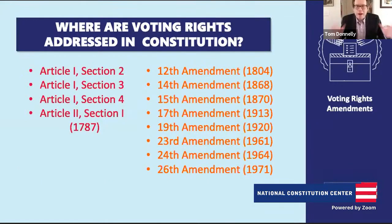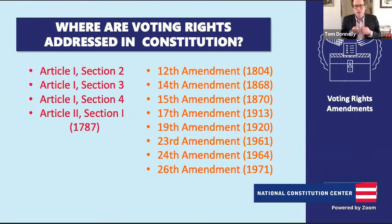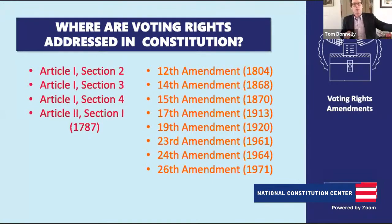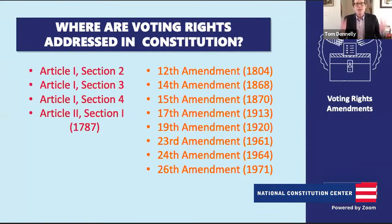Tom Donnelly: Absolutely. One of the great things about the original Constitution is that the framers put in a process for amending it—Article 5. It tells us that the founders, though brilliant in many ways, didn't think they had all the answers. It's a really high bar: every amendment starts by being approved by two-thirds of both houses of Congress, then ratified by three-fourths of the states. But what's amazing is so many times we've amended the Constitution, it's had to do with voting and elections. We have 27 amendments, and eight of them have to do with voting and elections.